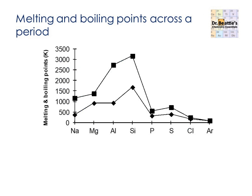Here we have a typical graph. On the x-axis we have period 3, and on the y-axis we have an increasing melting and boiling point in Kelvin. We have two trend lines on this graph: the first is the lower melting point, and the second is the higher boiling point. But you can see they follow pretty much the same patterns as we go across the period. As we go across the period, the types of structure and bonding change, so we're going to look at these in sections.